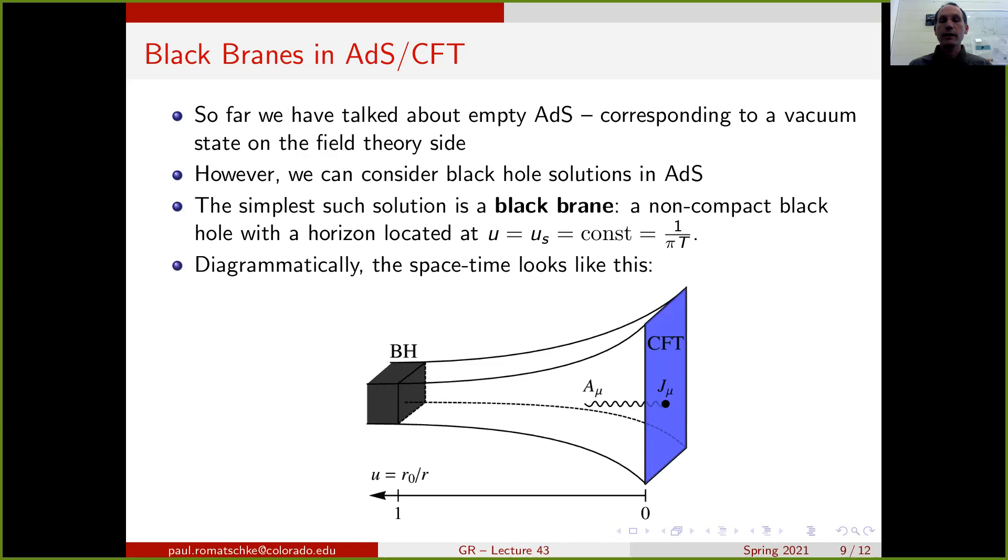Diagrammatically, the spacetime that we are describing now looks like this. At u=0, we have the conformal boundary, and we interpret this as such that our quantum field theory that we are trying to calculate properties of lives on this boundary here. So this is a four-dimensional boundary, 3+1 spacetime dimensions. And then we have this fifth coordinate that tells us that there is a gravity description that's extending, we call it extending into the bulk. And at some value of this coordinate u, there will be our black brane that's sitting here, and that's essentially blocking any information of this to come out, except for Hawking radiation.